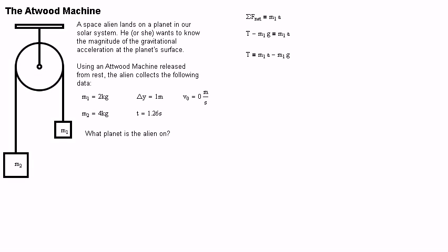The same is done for the second mass. The net force on the second mass is equal to M2 times A. Positive T going up, it's over here. Negative weight going down, M2G.